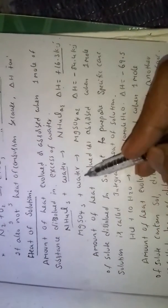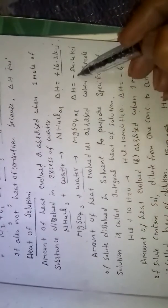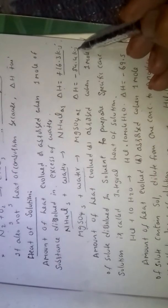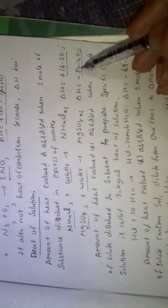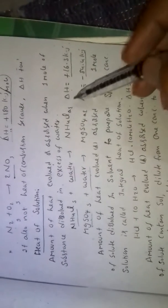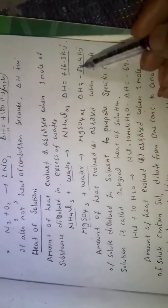MgSO4 dissolved in water, delta H minus 84.4 kilojoules. So this one is exothermic reaction. Heat of solution may be endothermic or exothermic.